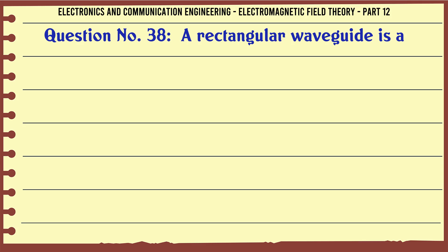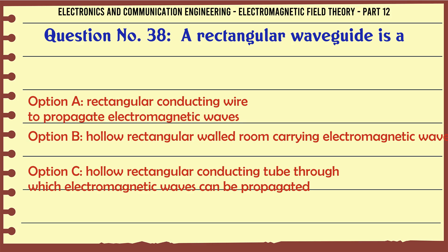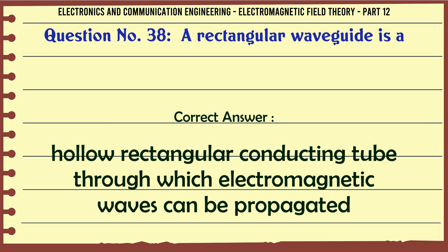A rectangular waveguide is: A. A rectangular conducting wire to propagate electromagnetic waves, B. A hollow rectangular walled room carrying electromagnetic waves, C. A hollow rectangular conducting tube through which electromagnetic waves can be propagated, D. A tube antenna to transmit and receive electromagnetic waves. The correct answer is: a hollow rectangular conducting tube through which electromagnetic waves can be propagated.